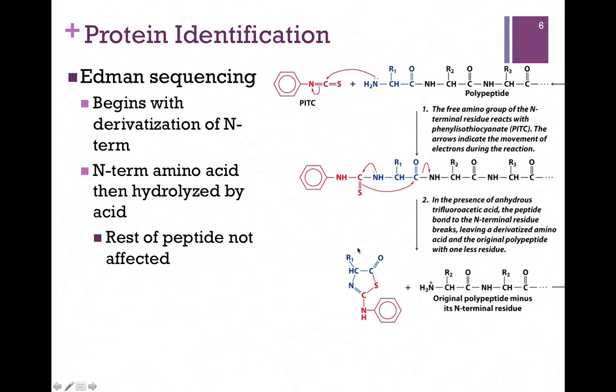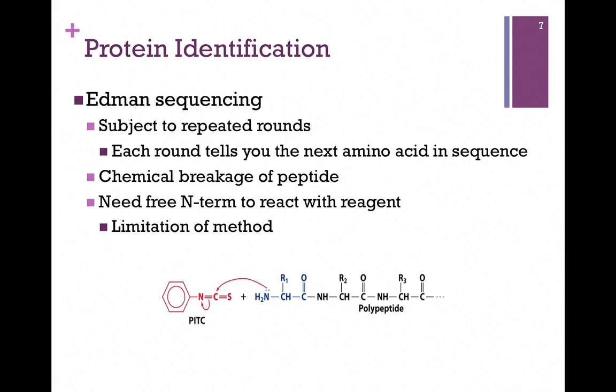And each of the 20 amino acids has its own spectral signature, and so we can detect the presence of which amino acid we produced by that first cleavage. You'll notice in this method, the rest of our peptide is intact. So now we can go through another round and determine the identity of the second amino acid in our sequence. We can do automated sequencing and therefore determine the sequence of multiple amino acids in our peptide.